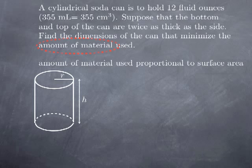The top is a disk of radius r, and the surface area of a disk is πr². Similarly, the bottom is also a disk of radius r, so its surface area is also πr². Because the top and bottom are twice as thick as the side, we count their surface area twice. So I multiply the surface area for top and bottom by two.